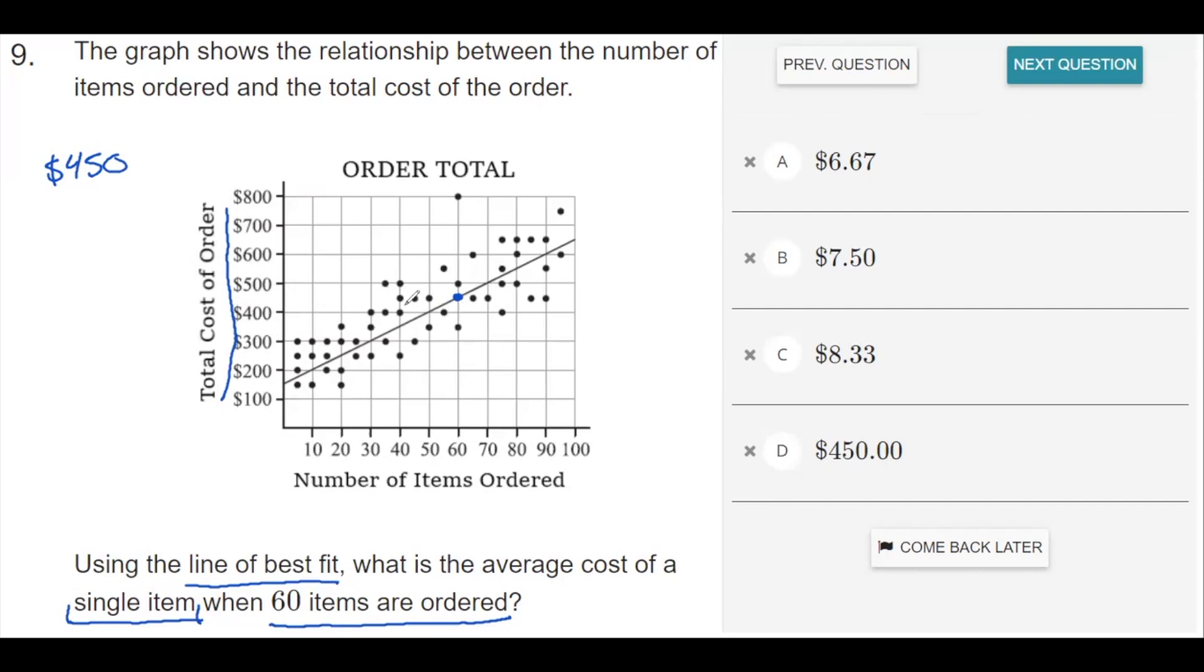So if all 60 items together equal $450, to get the price of a single item, I would divide it by 60.